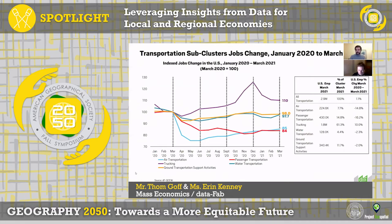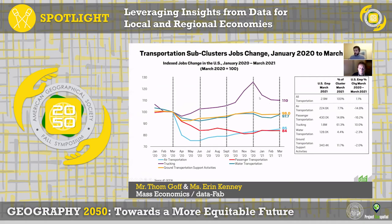It's fun to look at the transportation clusters and their performance during COVID. Air transportation and passenger transportation are extremely hard hit by COVID-19 and travel restrictions — the most recent QCW data shows them about 15 percentage points below where they were pre-COVID. On the other hand, trucking in purple shows explosive growth driven by e-commerce, and it's still about 10 percentage points higher than pre-COVID.